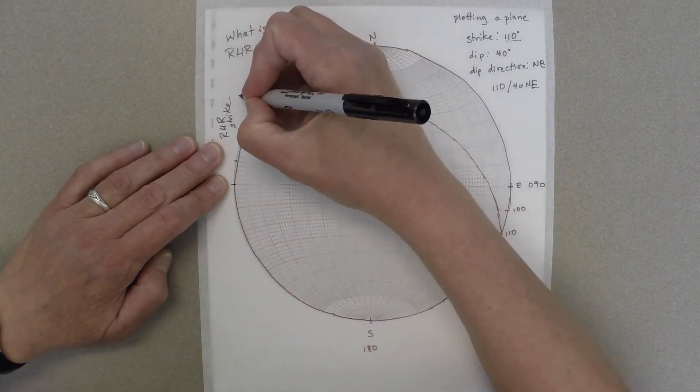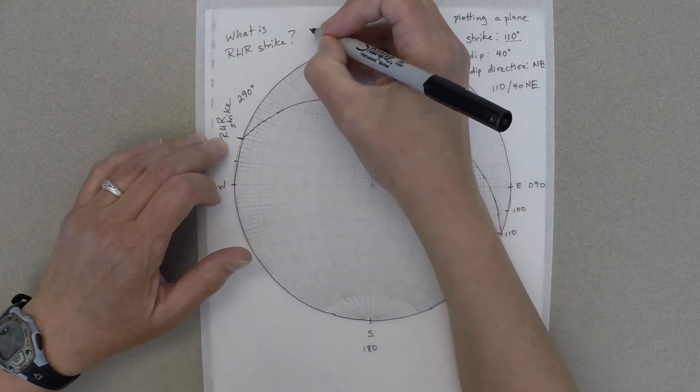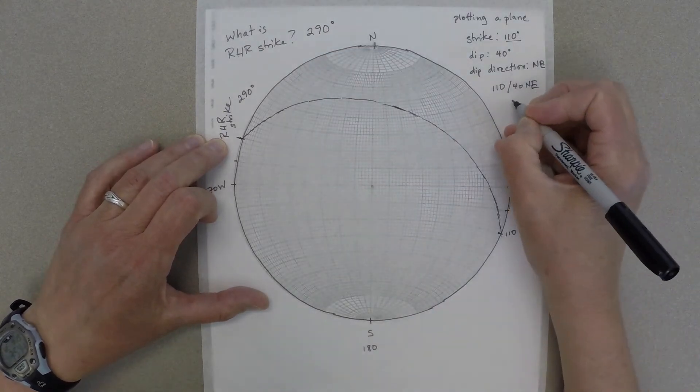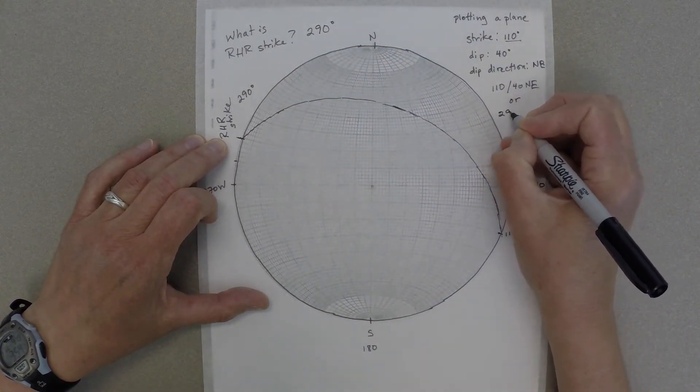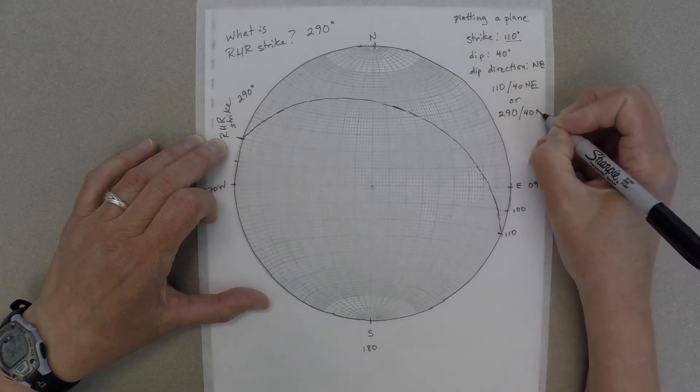So in this case, it's 270, 280, 290 degrees. So our right-hand rule strike is 290 degrees. And we could write this strike and dip as 290 degrees, dipping 40 degrees to the northeast.